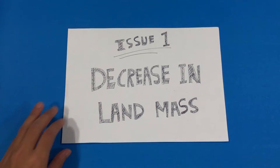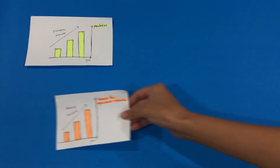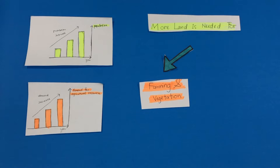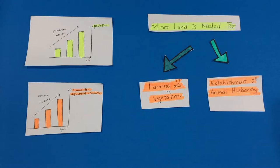Firstly, overpopulation will lead to a decrease in land mass. As the population continues to increase, it is important to remember that demand for resources also continues to rise. The need for more agricultural resources increases the land needed for farming and vegetation. The available agricultural land is also used for many purposes other than crop production, for example the establishment of animal husbandry, to fulfil the need of milk products.